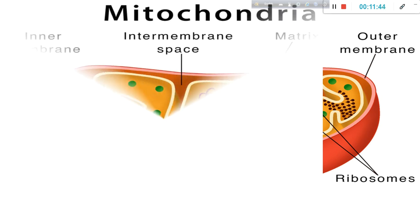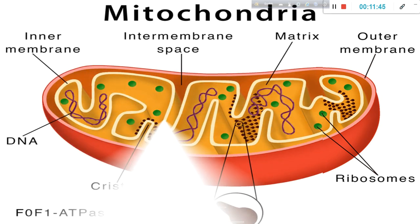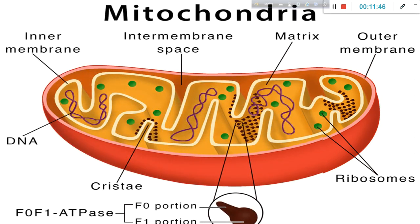The structure of the mitochondria: 'a' represents the outer membrane and 'b' represents the inner membrane.